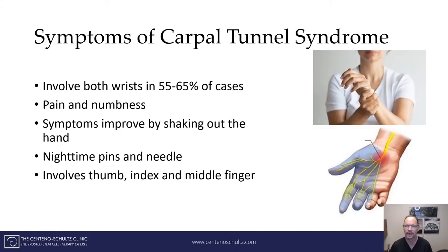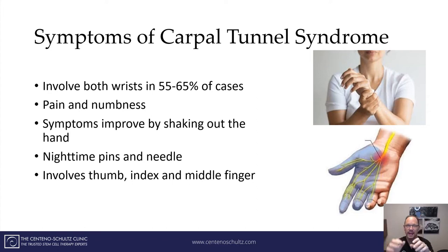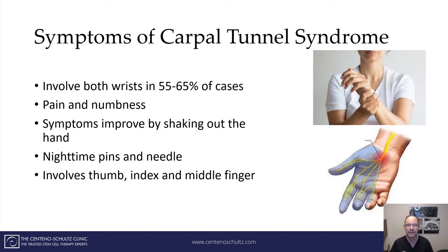The symptoms are very important. In 55 to 65 percent of all carpal tunnel cases, it involves both wrists. The common denominator is pain and numbness. Often patients say that if they shake out their hand in the morning, it gets better. Patients also commonly complain of nighttime pins and needles. The pattern most commonly involved is the thumb, index, and third finger, as illustrated here.